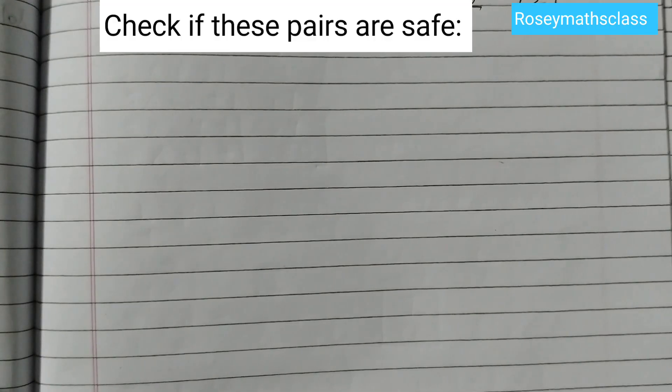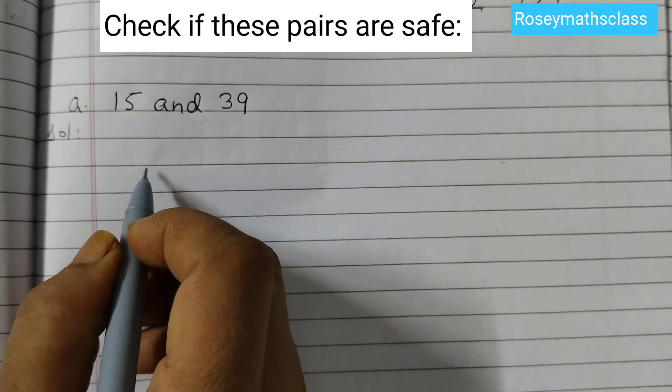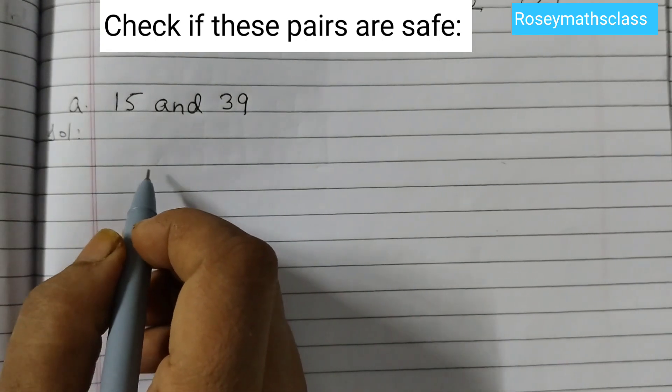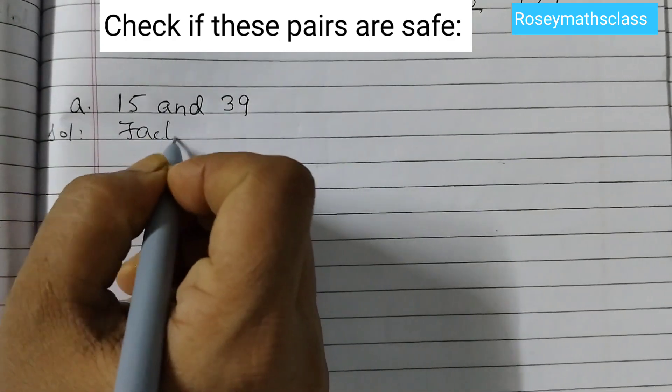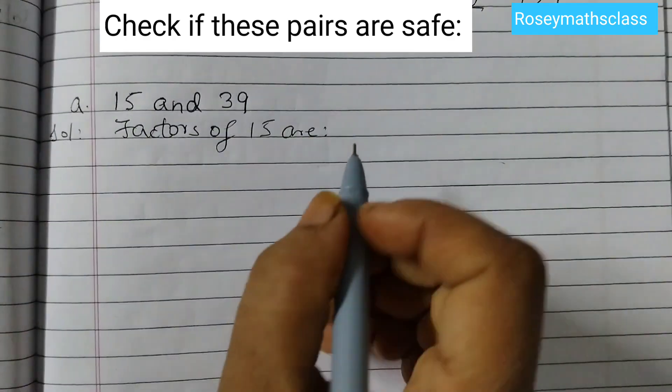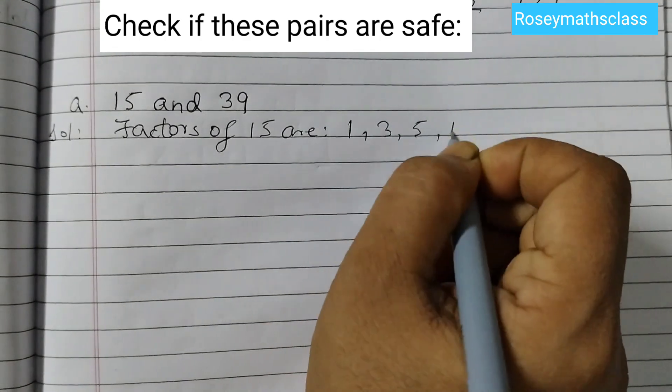Check if these pairs are safe. The first one is 15 and 39. To find out if these two numbers are safe or co-prime, we need to find the factors of 15 and 39. Factors of 15 are 1, 3, 5, and 15.